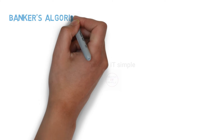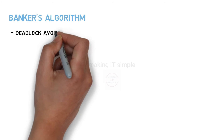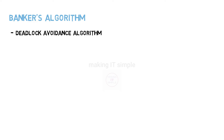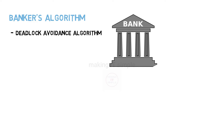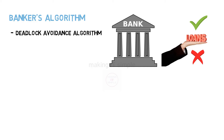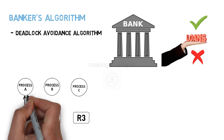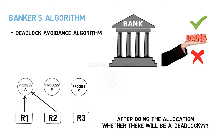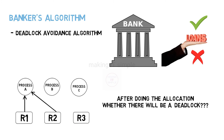Banker's algorithm is one of the deadlock avoidance algorithms. It is called the banker's algorithm because it is majorly used in banking systems — it helps to identify whether a loan should be given or not. The algorithm in the operating system checks for each process whether allocating resources to a process may lead to deadlock or not. Let us solve one problem to get a clear idea of the algorithm.